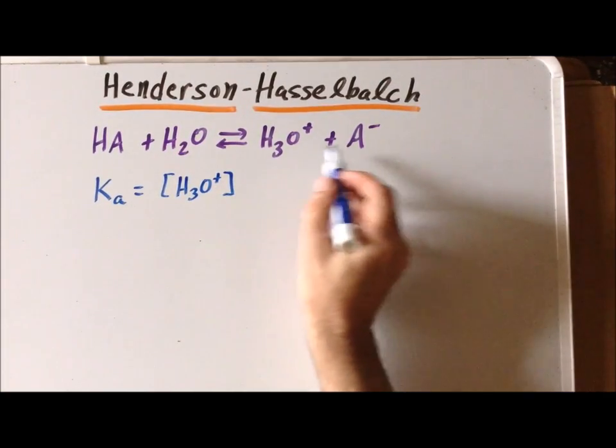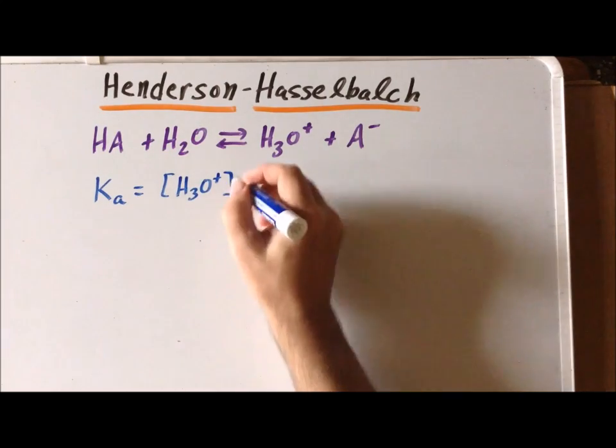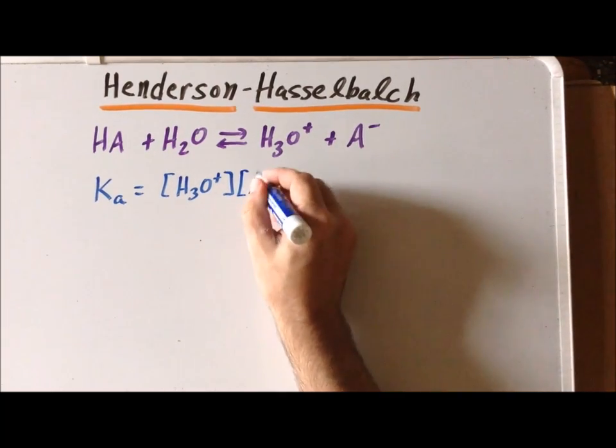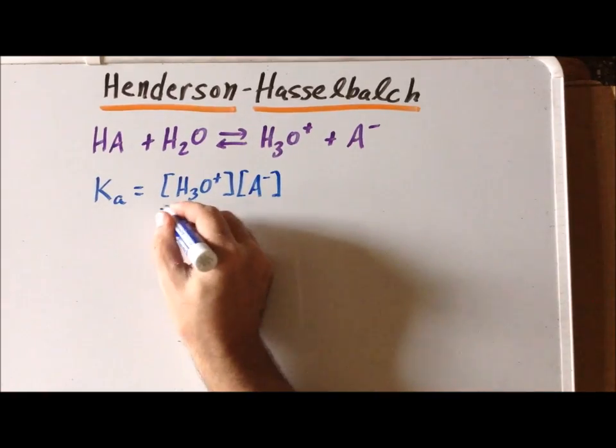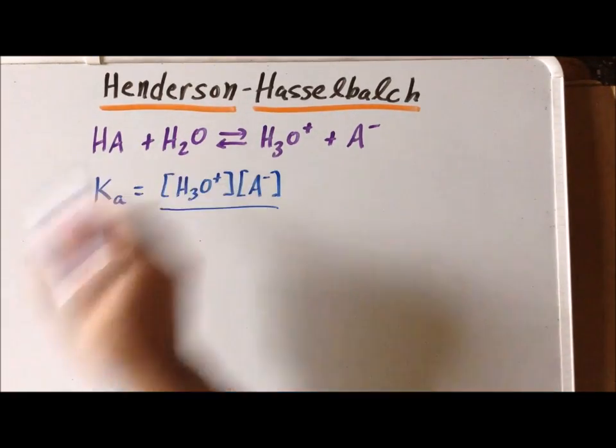While we have addition here in the equilibrium, we multiply the concentrations. And then in the denominator, we write the reactants.